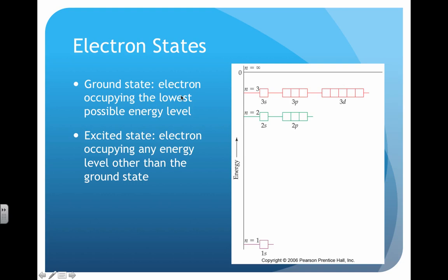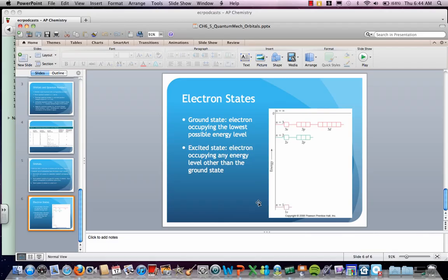Ground state, just so you know, is the lowest possible energy level for an electron, and an excited state is when an electron moves to a higher level other than the ground state. And this is something you probably already knew, but I just wanted to throw it out there. And that's it for now.